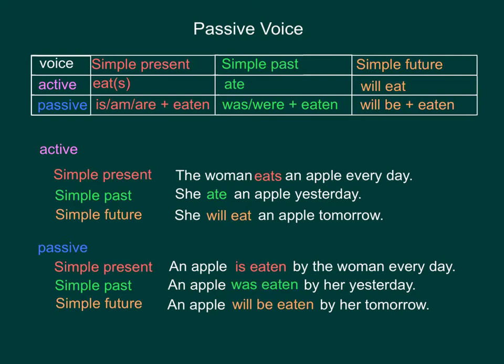You may notice the word form in the passive voice has one more word than the active voice, and the last word in the passive verb form must be a past participle — in this case, the word eaten.